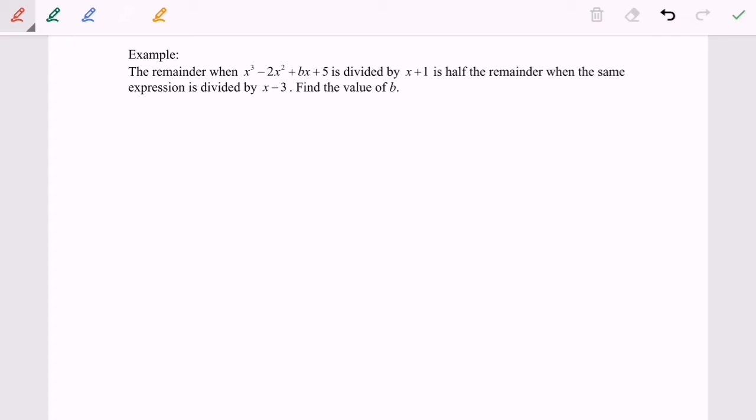So now I'm going to write P(-1). This is also what we call the remainder, which is half the remainder when the same expression is divided by x minus 3, which is going to be P(3).